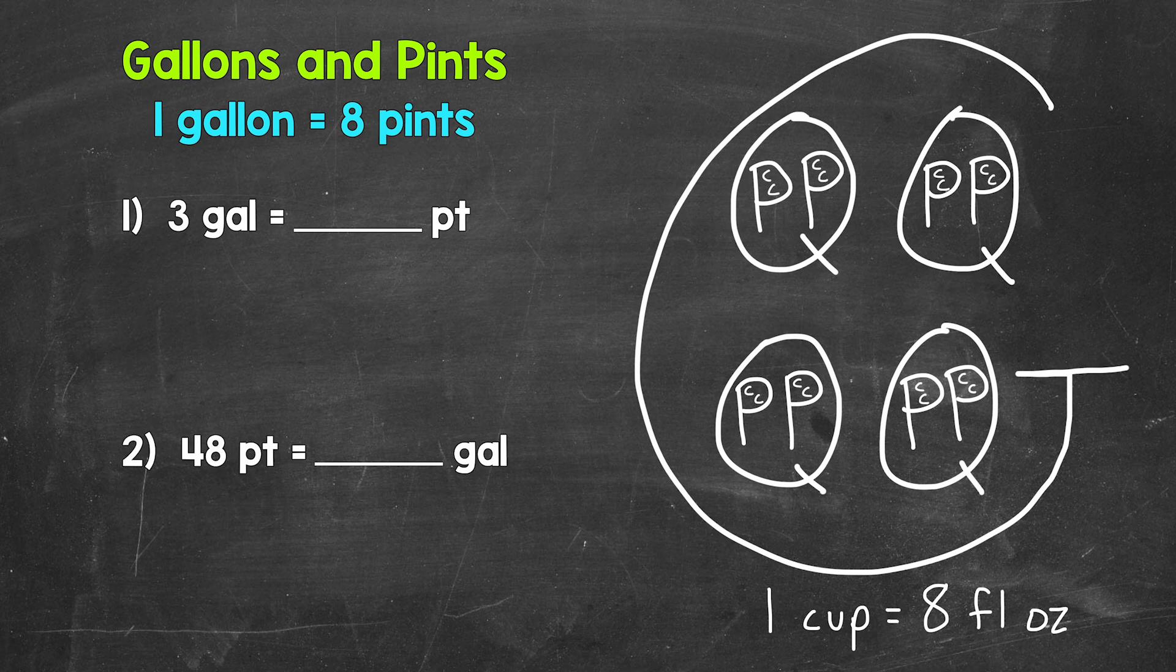To start, there are eight pints in a gallon. In other words, one gallon equals eight pints. Now I have a big G over here representing a gallon, and this is going to help us with capacity conversions. And we can see that we have eight pints in there equaling that gallon.